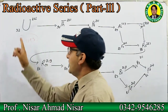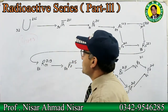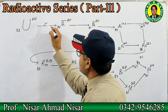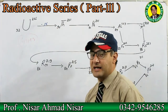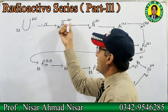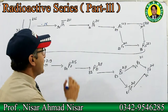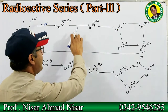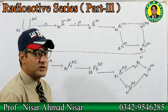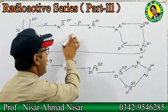Let's start the decay chain. We have uranium-92-235. Here an alpha particle is emitted, so the atomic number decreases by 2 to give 90, and the mass number decreases by 4 to give 231 — that is thorium-90-231.